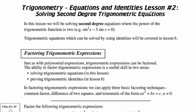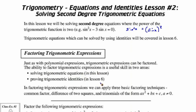Let's talk about trigonometry equations and identities, lesson number two: solving second-degree trigonometric equations. We're going to talk about solving second-degree equations where the power of the trig function is two. An example here is sine squared x minus three sine x equals zero. When we talk about sine squared x, that actually means sine of x all squared. The ability to factor trig expressions is useful for solving trig equations and also proving trig identities, which we'll see later.